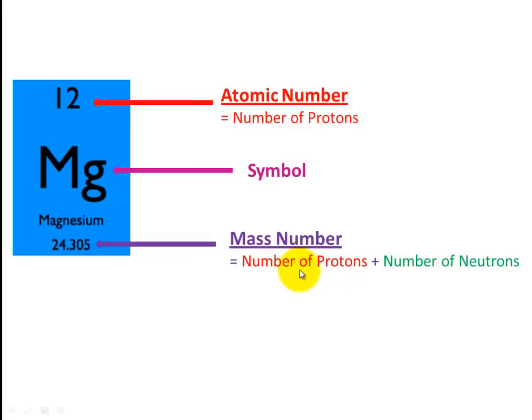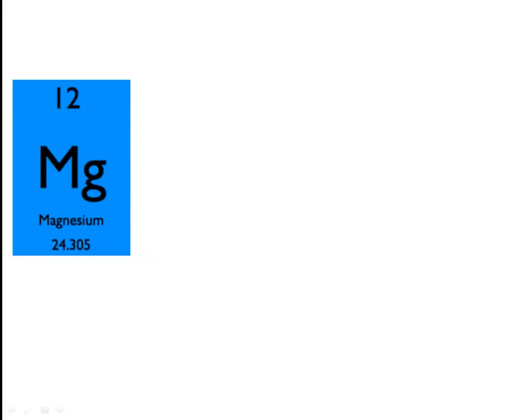And at the end of this video I am going to show you how to use the Mass Number to work out the number of Neutrons. But at the moment what I would like you to remember is that the Atomic Number, so the smaller number of these two numbers, is equal to the number of Protons in that atom.